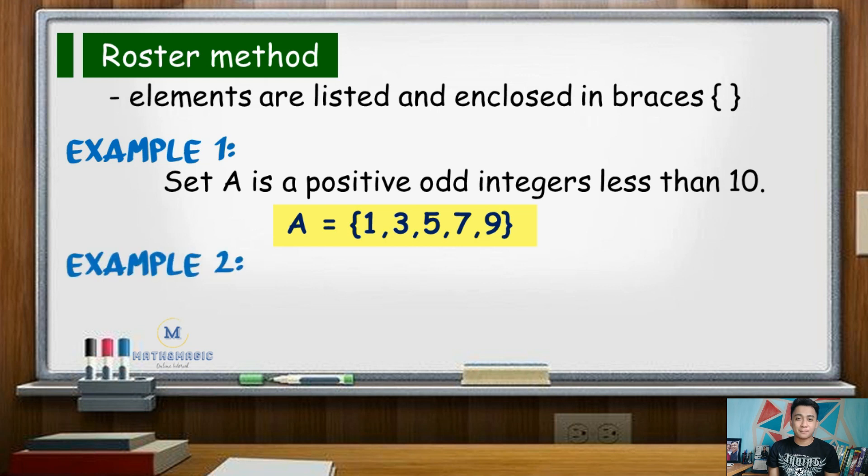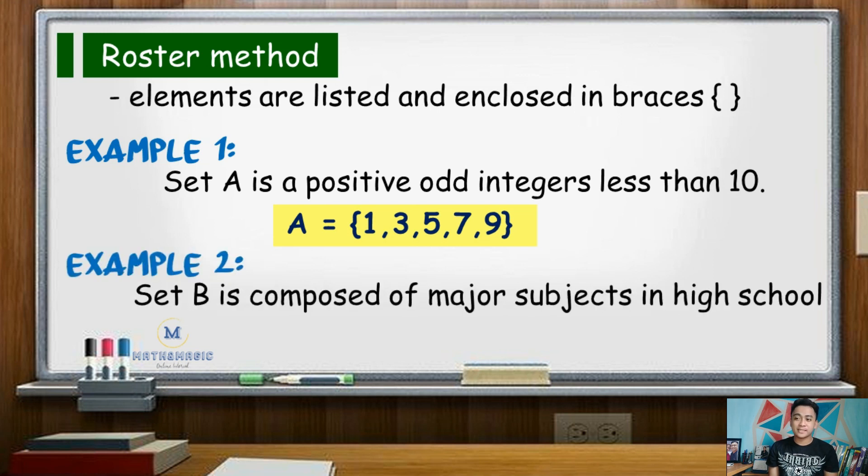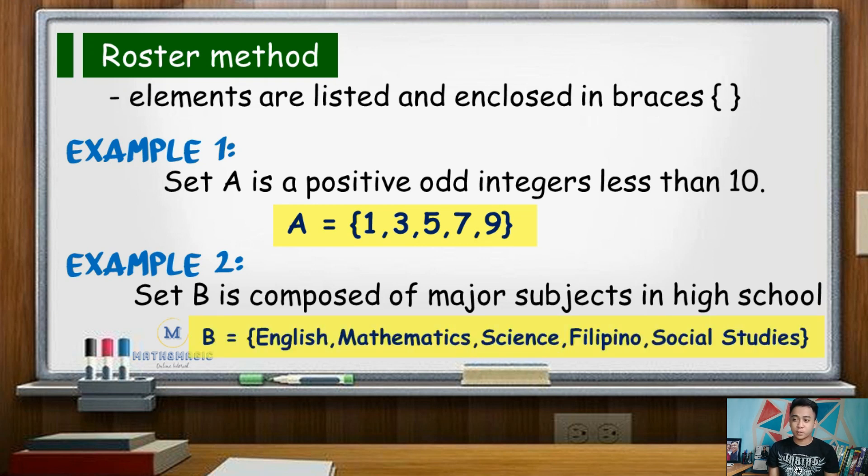Another example, set B is a set of major subjects in high school. Writing this in roster form, set B will contain the elements English, mathematics, science, Filipino, and social studies.